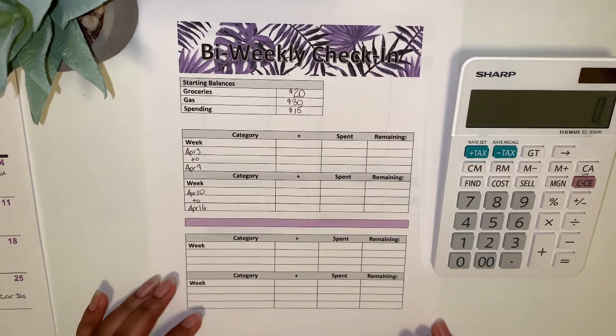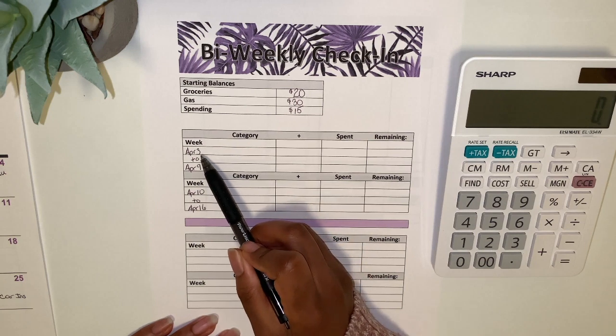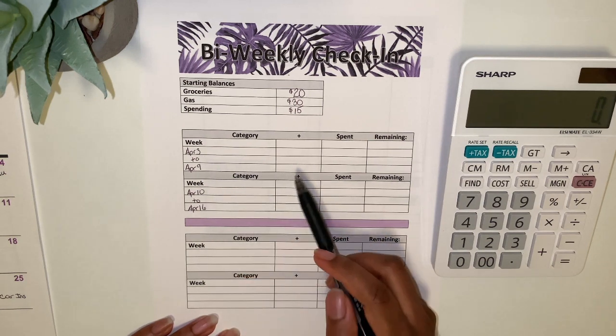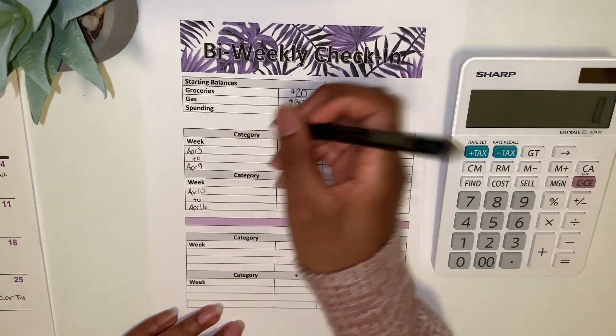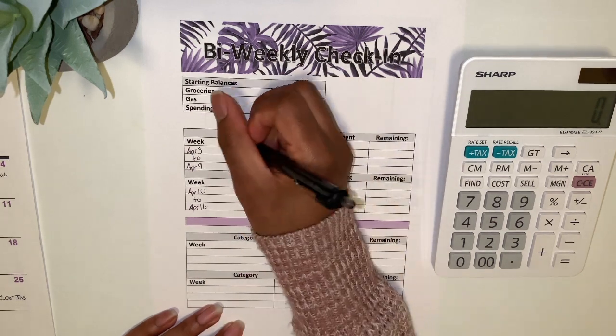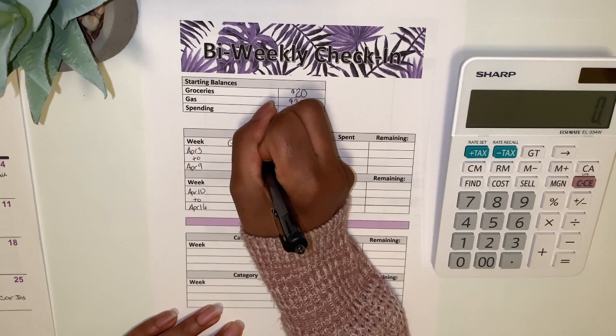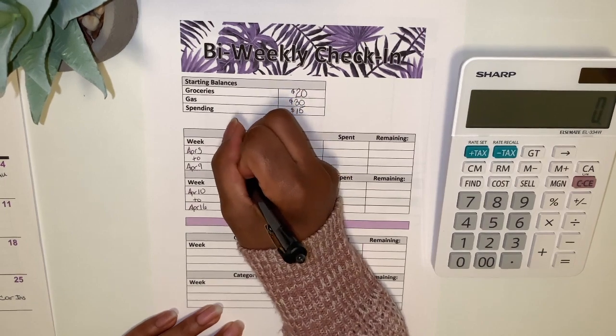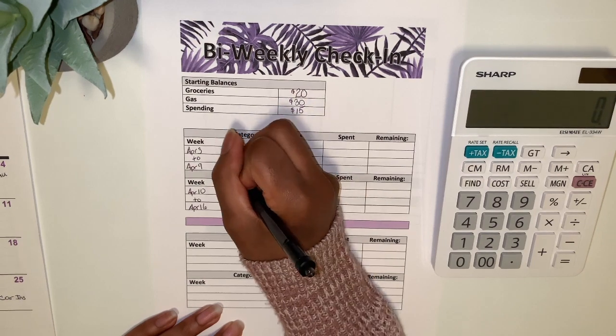Alright, so that's the setup. So first going into the categories, I didn't even write the categories, so I track my groceries, my gas, my spending, and then I have unbudgeted.